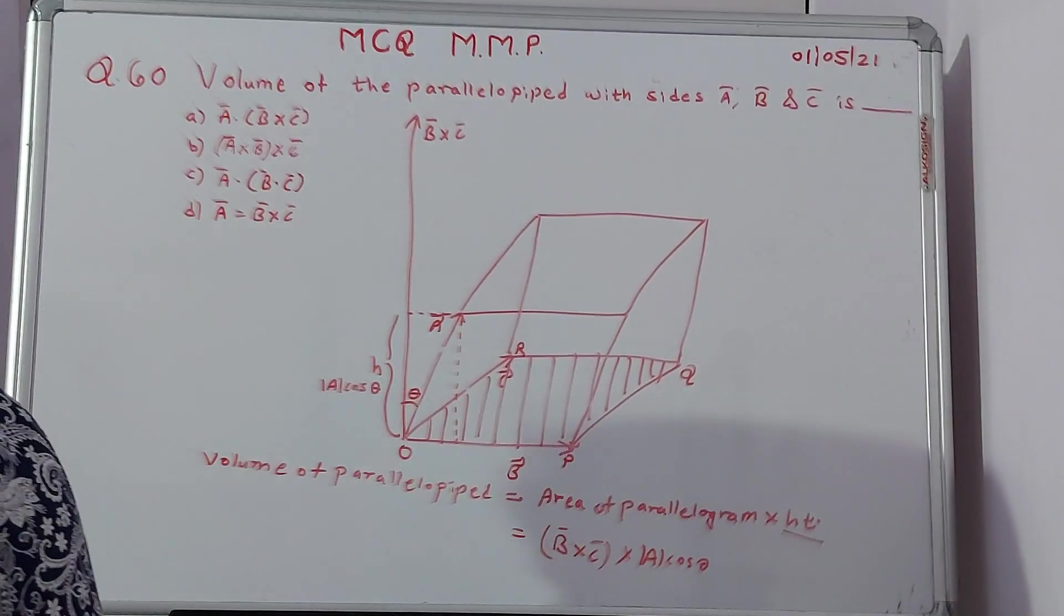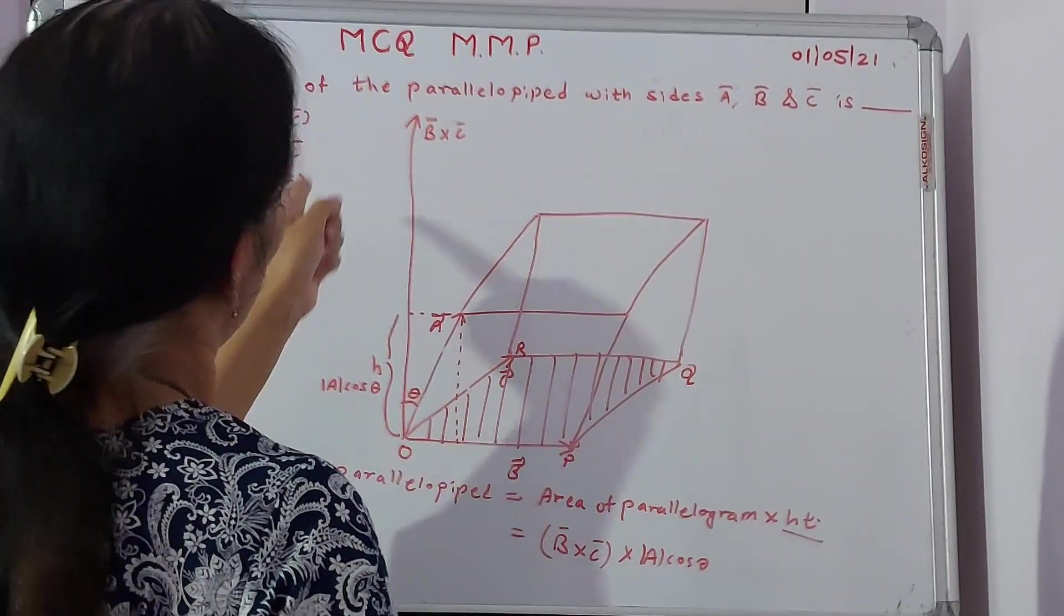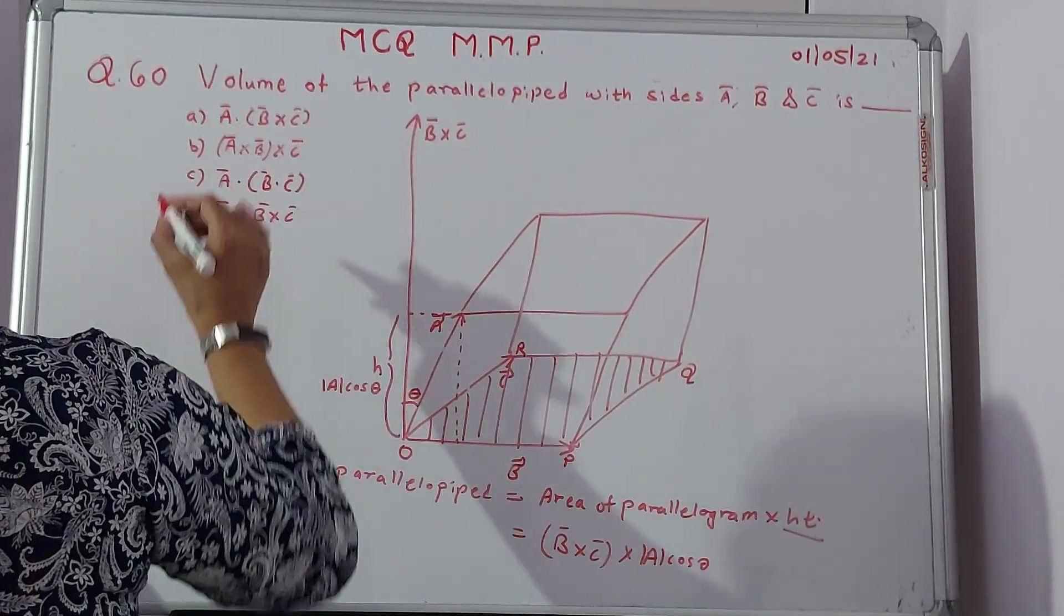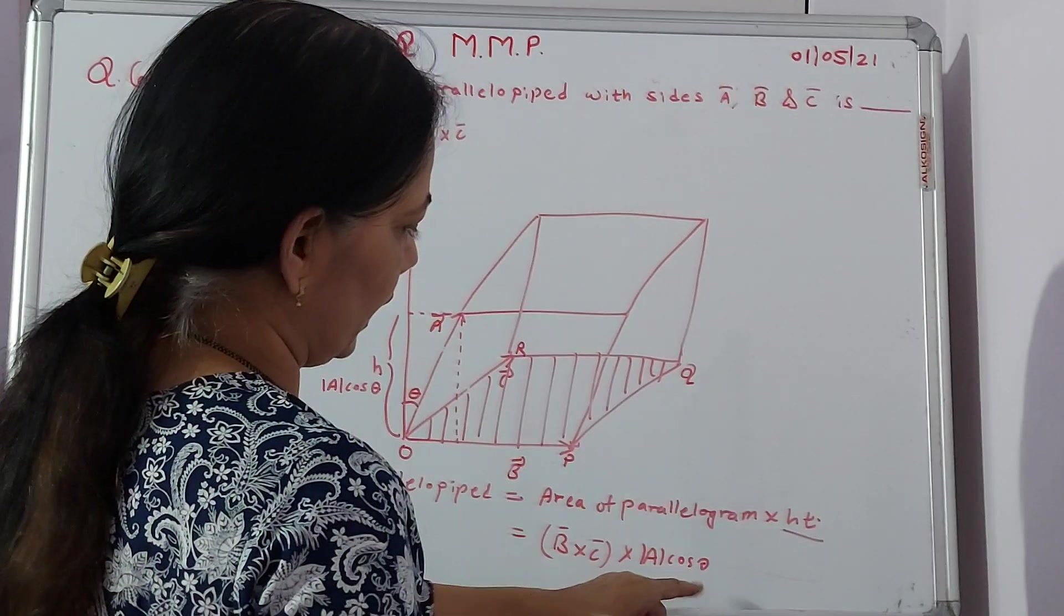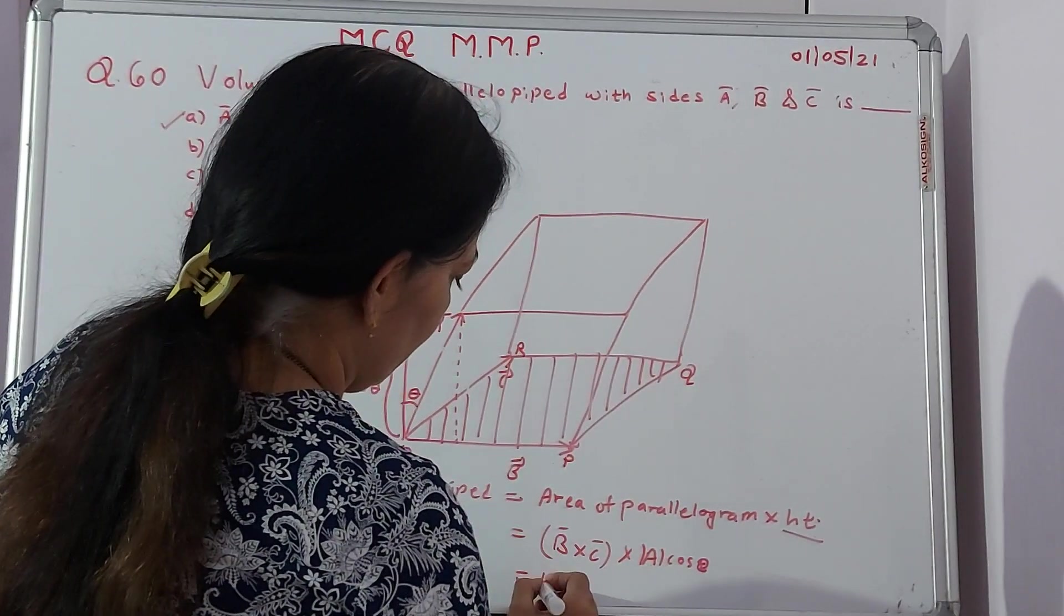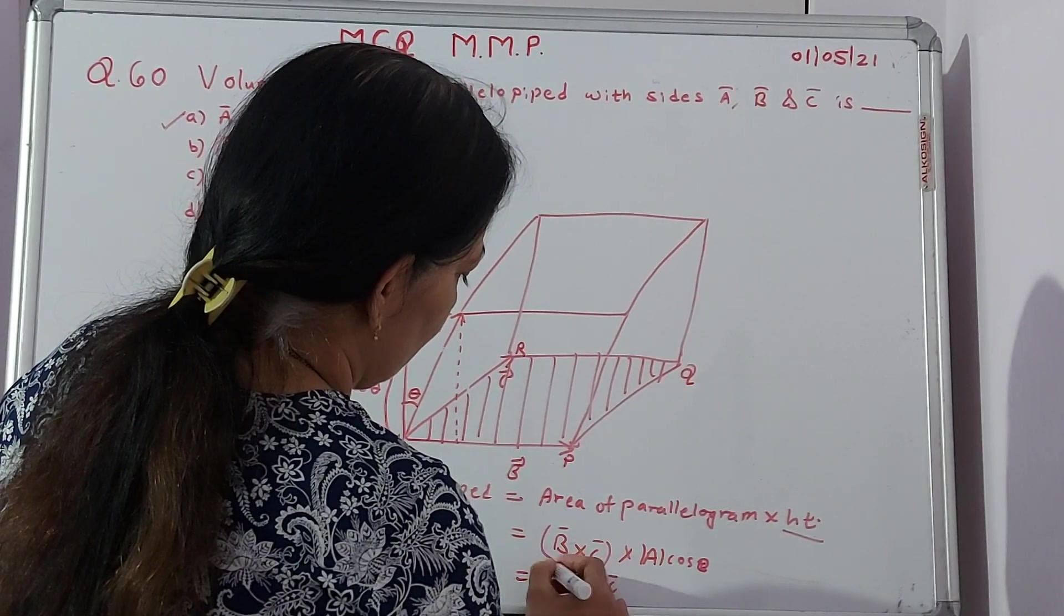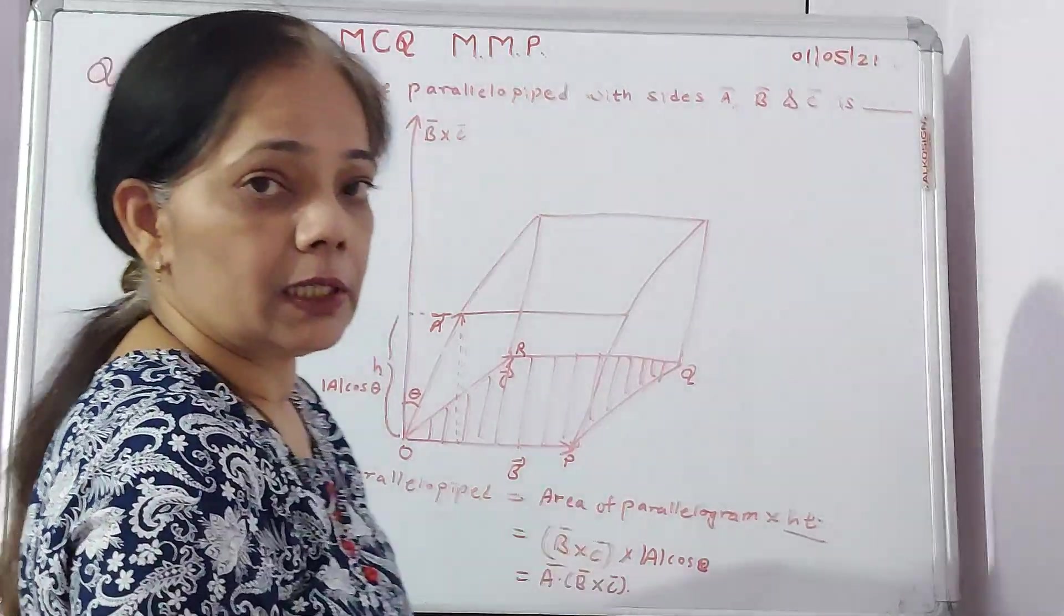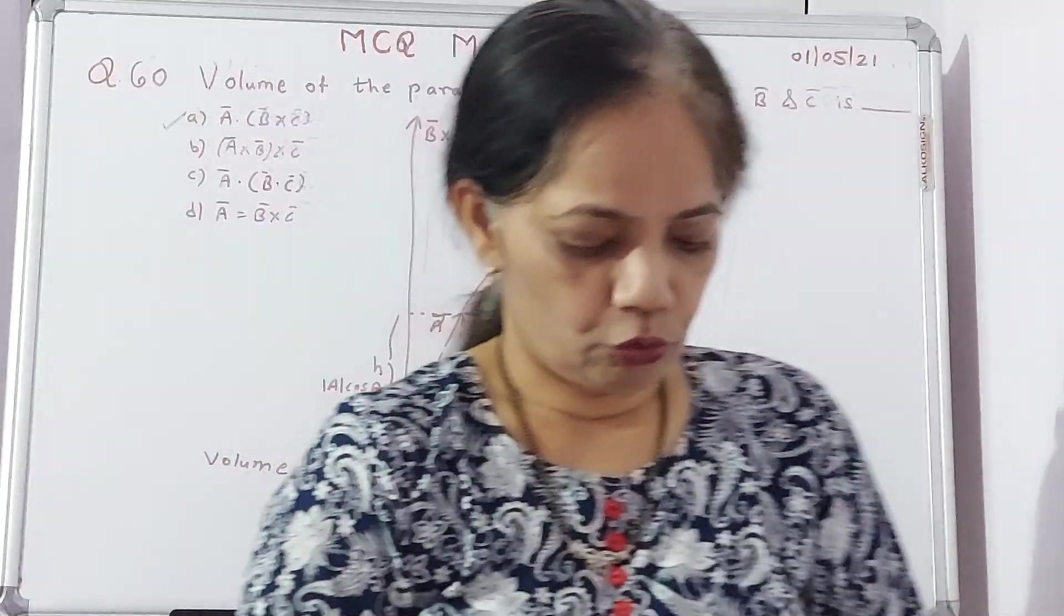Therefore, we can say confidently that the value of volume, value of the volume of parallelepiped with sides A, B, C is nothing but A dot B cross C because we have got the angle also over here correctly. So A dot B cross C will be given over here. We can say A dot B cross C. So B cross C will be the vectors in parenthesis because this is shown by the parallelogram.